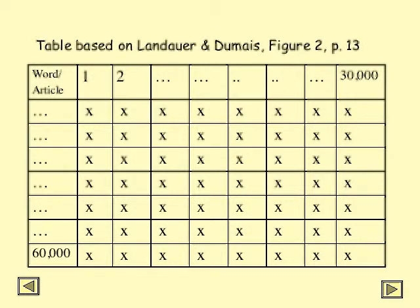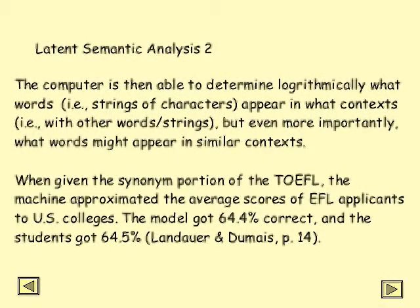This table was then further reduced to vectors weighted for how often a word appeared and in how many different articles — further algebraic matrices were applied. You can get the software that Landauer and Dumais used and try this out for yourself if you have a very large computer; the address is at the end of the references. The latent semantic analysis produced a model of a general learning mechanism. The computer could determine logarithmically what words — strings of characters — appear in what context, and more importantly, what words might appear in similar contexts. Landauer and Dumais then had the machine take the synonym portion of the TOEFL, and the machine approximated the average scores of EFL applicants to U.S. colleges: the model got 64.4 percent correct; the students got 64.5 percent correct.